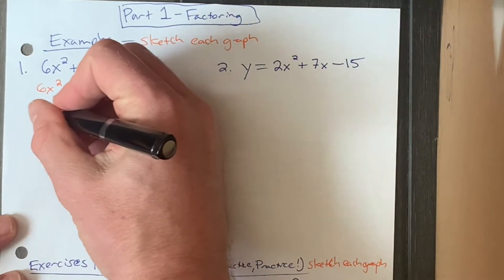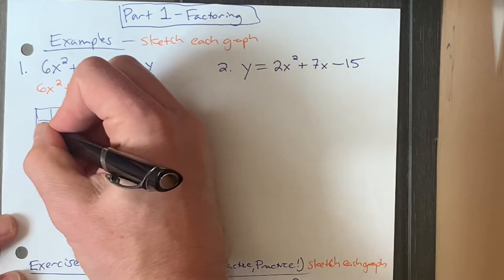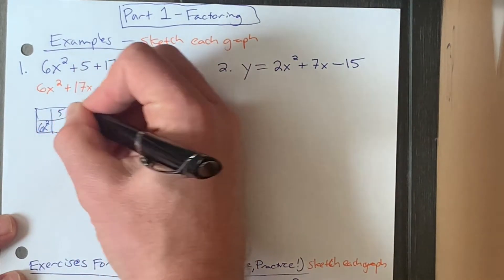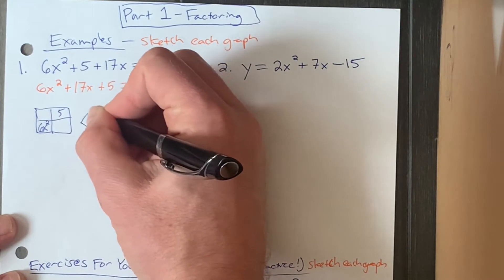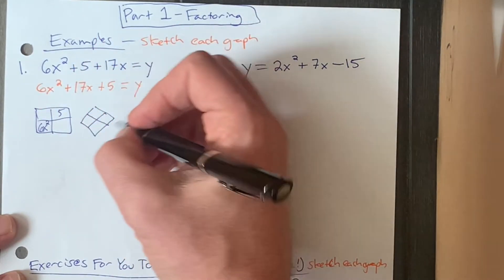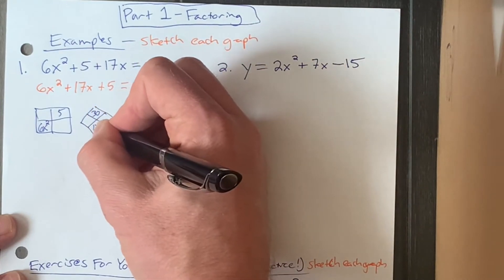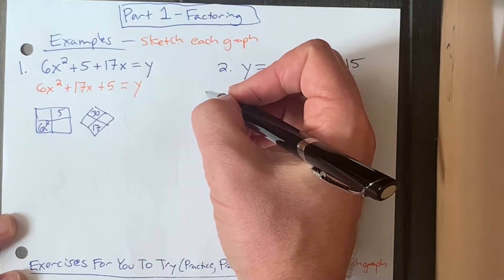Because we don't have an a of one, we have an a of six right here, we gotta use our box method, box and diamond method, to quickly figure out what the factors of that quadratic is. So 6x squared times 5 would be 30x squared. I'm gonna put the 30 there, we have 17 x's to help us figure out the way that it's arranged.